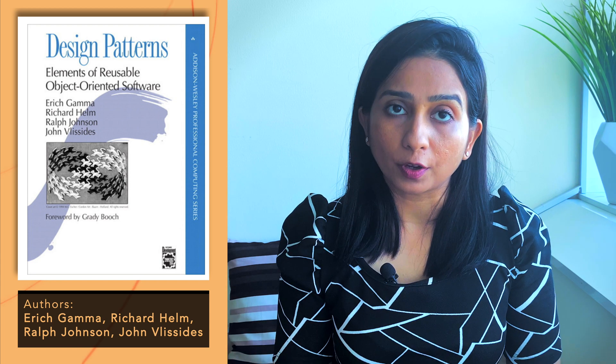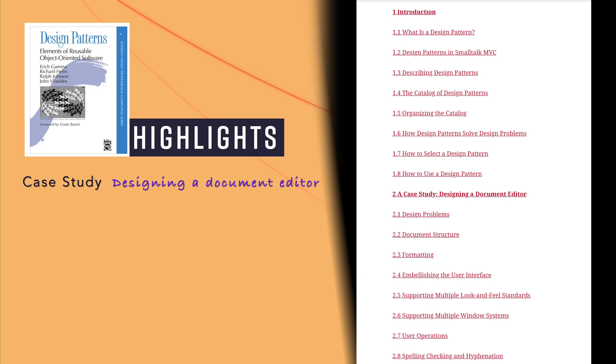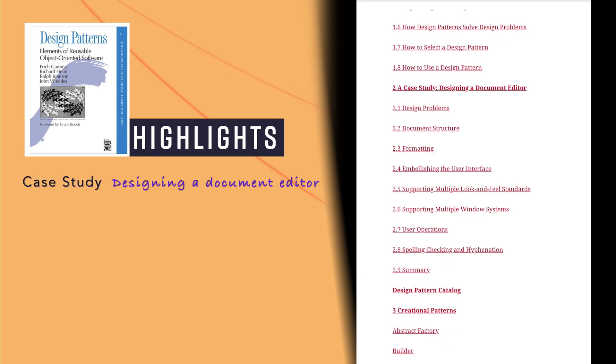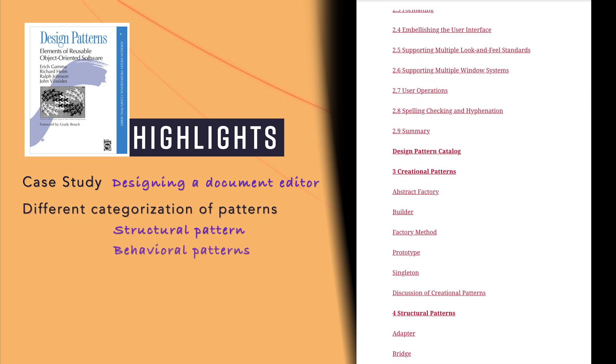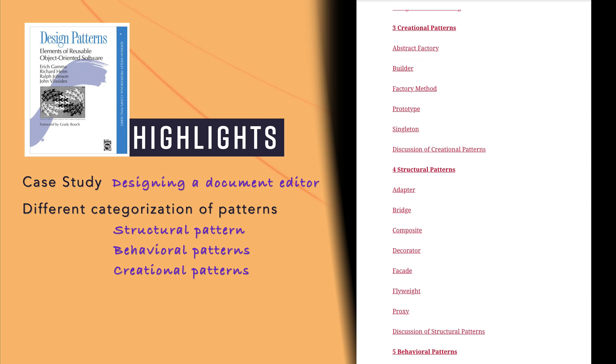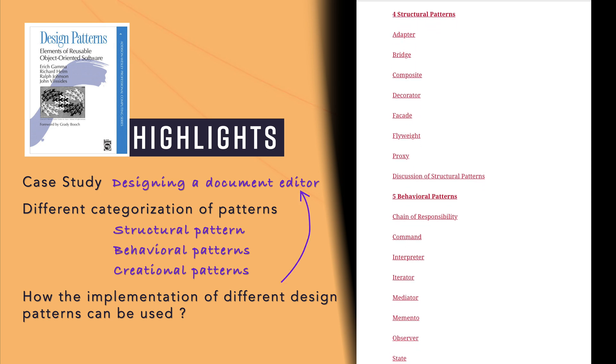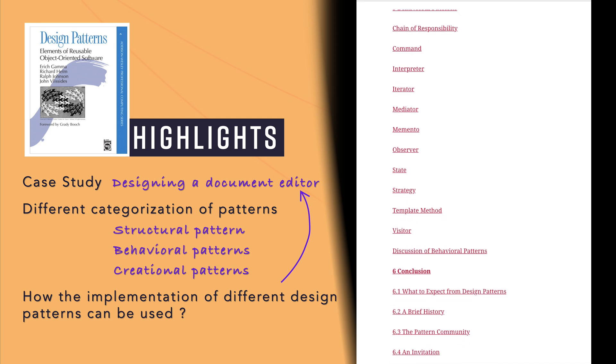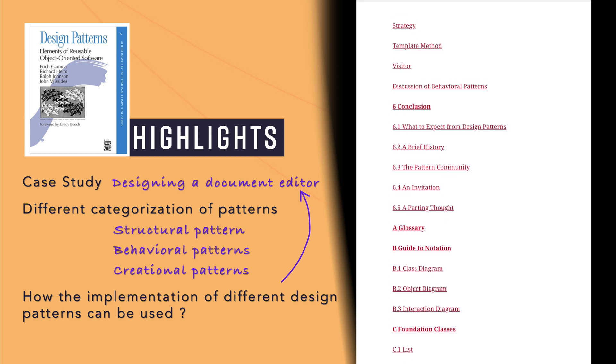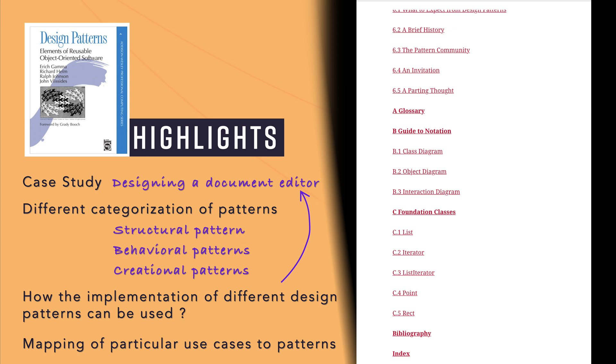The second book, to understand the overview and categorization of different design patterns used in low-level design, is the famous Gang of Four book. The name of the book is Design Patterns: Elements of Reusable Object-Oriented Software. It is popular as the Gang of Four because it is written by four different authors. This book starts with a case study of designing a document editor and then delves deep into different categorizations of patterns like structural patterns, behavioral patterns, and creational patterns. It's a good book for understanding how the implementation of different patterns can be used to design something like a document editor, and how particular use cases can be mapped to what kind of pattern to use. It is not a short book — around 400 pages — but for a good understanding of patterns both theory and implementation wise, this is a good book.